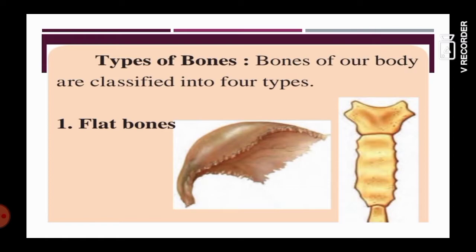There are four types of bones in our body, classified as follows. The first type is flat bones. Here you can see two flat bones: the first is the clavicle, present in your shoulder, and the second is the sternum, which is present at the center of your ribcage. If you press at the center of your chest, you will feel the sternum — that is a flat bone.